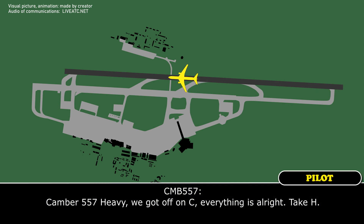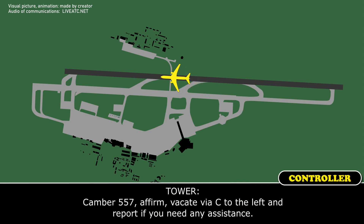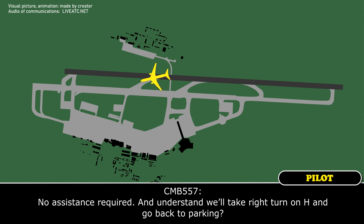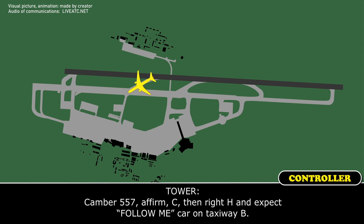Camber 557 Heavy, we'll get off on Charlie if that's alright — take Hotel. Camber 557, taxi via Charlie to the left and report if you need any assistance. No assistance required — I understand we'll take a right turn on Hotel and go back to parking. Camber 557, affirmative — Charlie, then right Hotel, and expect follow-me car on taxiway Bravo.